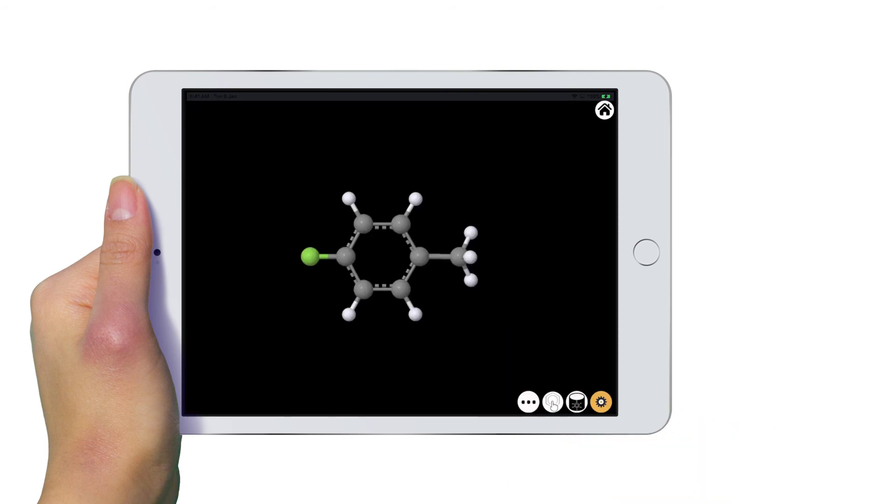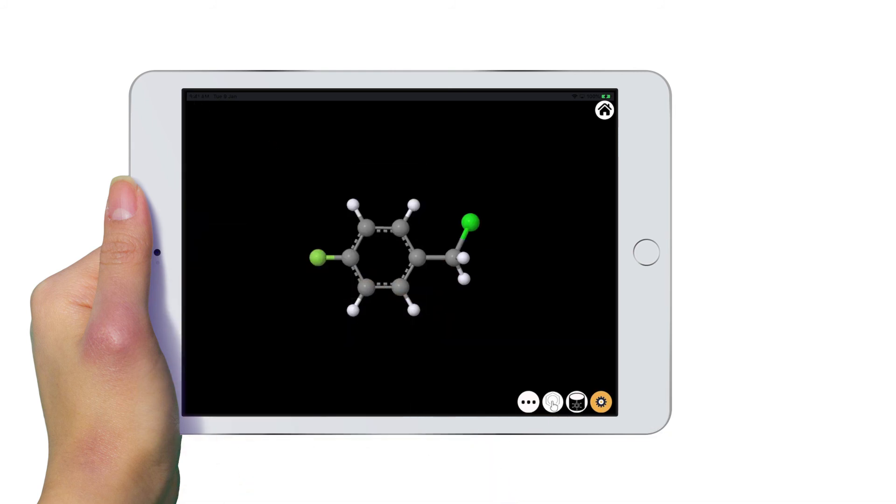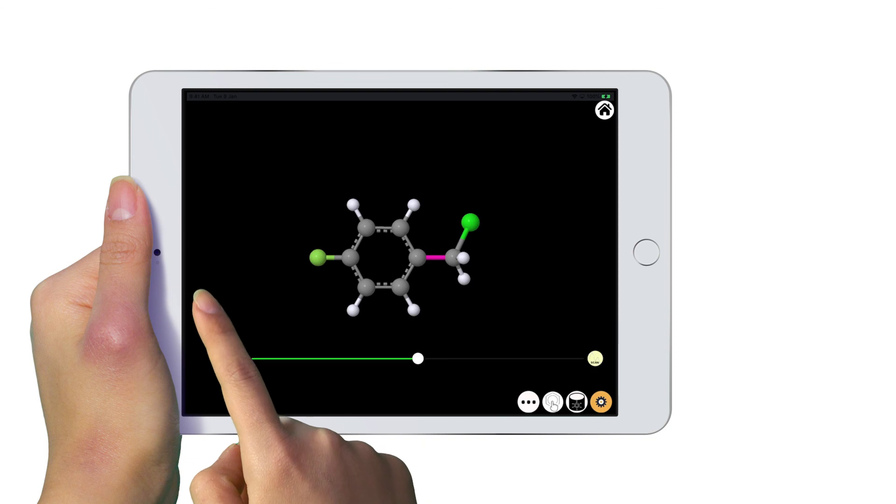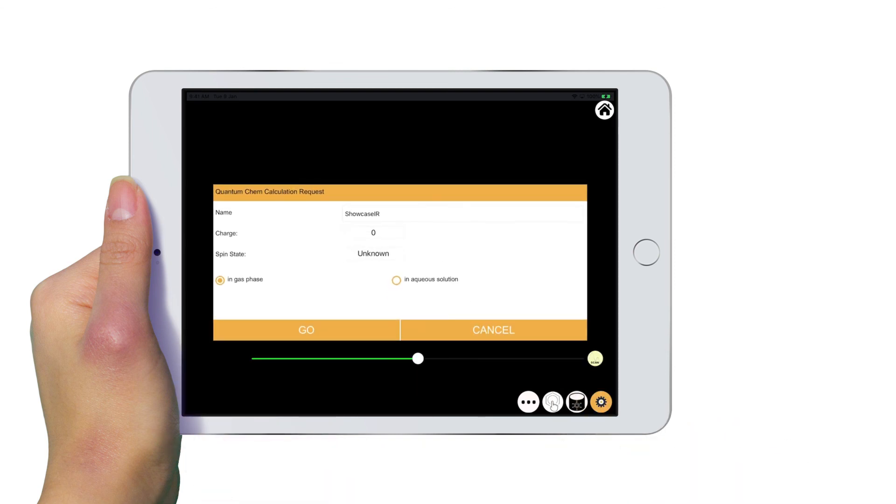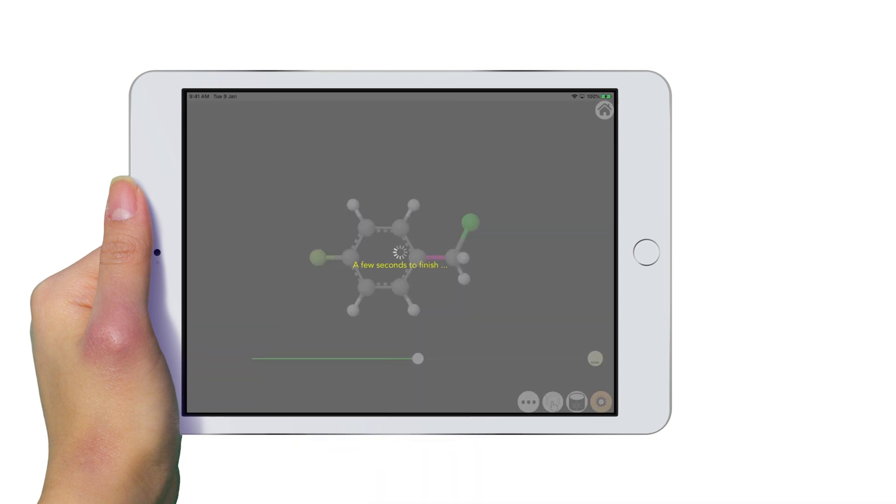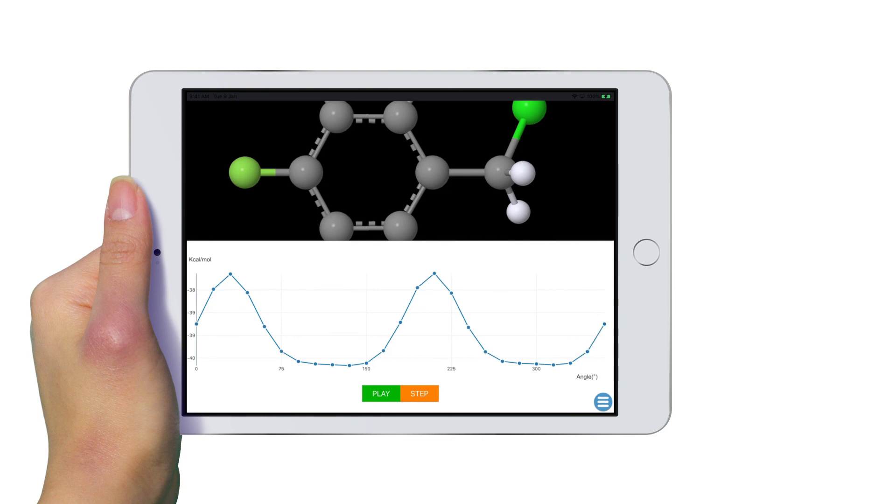MoCubed also allows modeling reactions such as bond rotations or dissociation. Let's do a bond rotation of the methyl group on this molecule after one of its hydrogens is substituted by a chlorine atom. Select the bond you want to model the rotation, then scan its rotational potential curve. Once done, you can view the potential energy scan of this rotation and animate the motion.